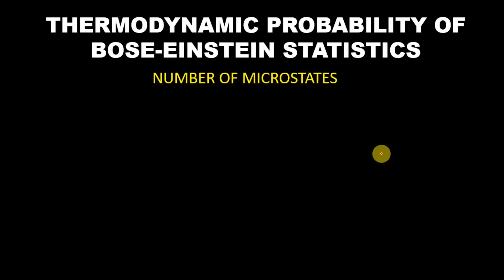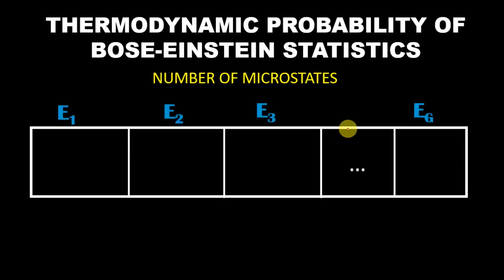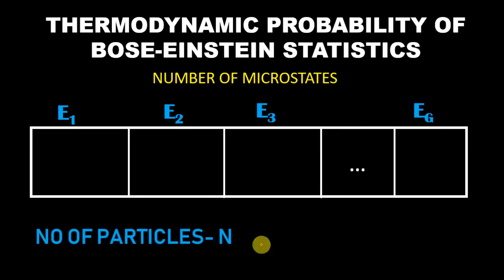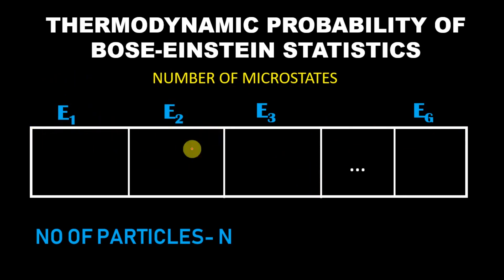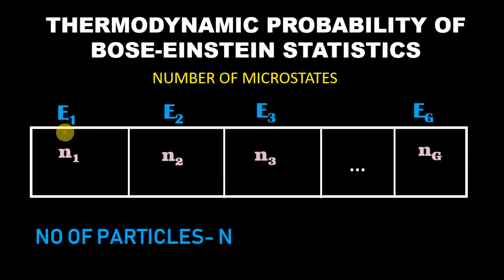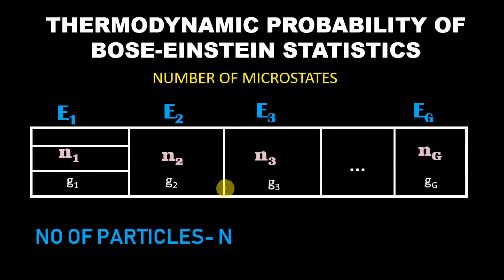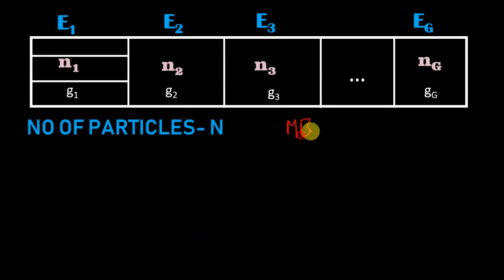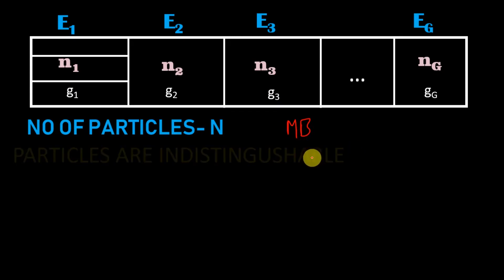Similar to Maxwell-Boltzmann statistics, we will imagine boxes which are nothing but energy levels, and we have a number of particles which are n. This number of microstates is how these n particles can arrange themselves in these energy levels. We assume this energy level contains n1 particles, this one n2, this one n3, and so on. Now there could be a possibility that these energy levels are degenerate, meaning there is further splitting of these energy levels. In Maxwell-Boltzmann statistics the particles were distinguishable, but here the particles are indistinguishable.